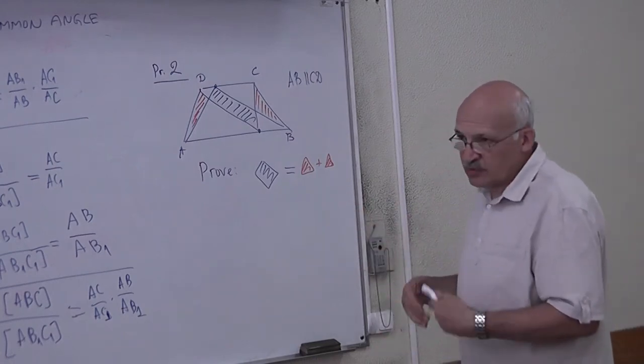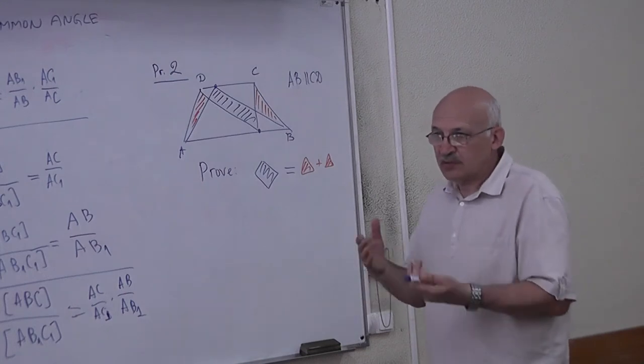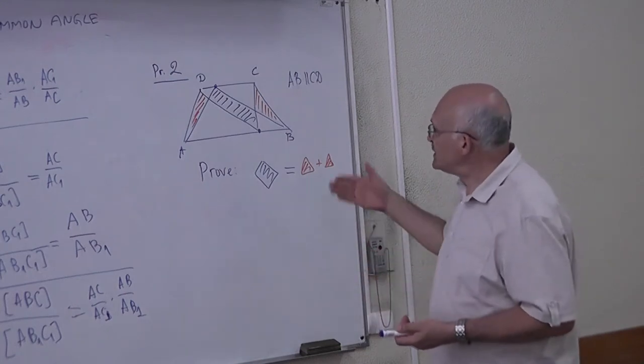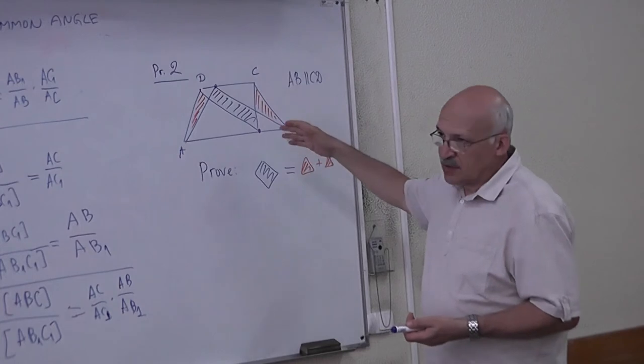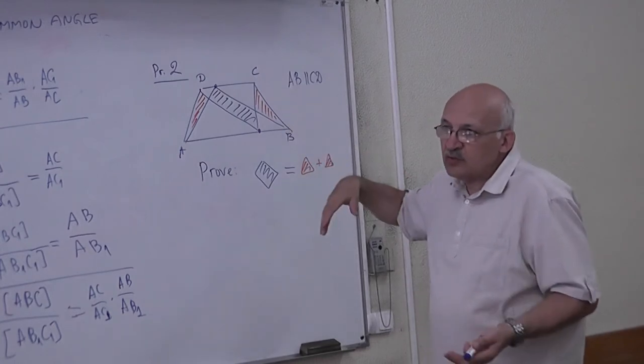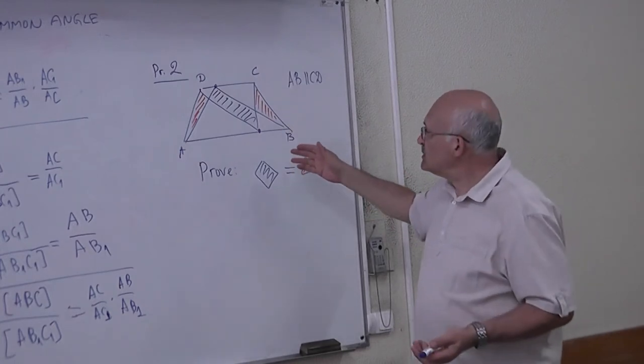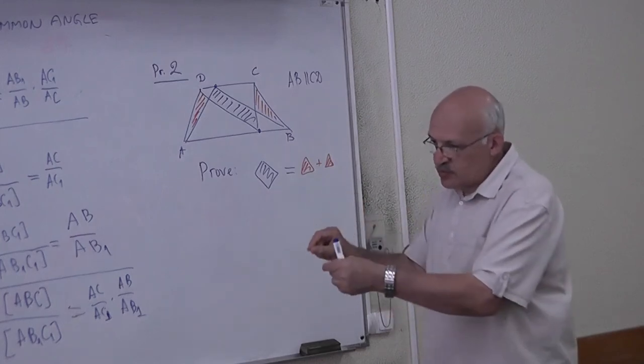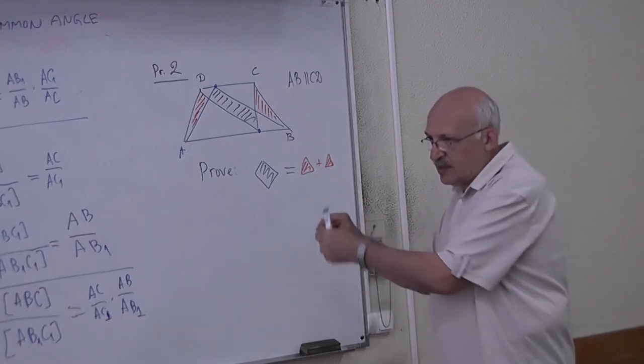Второй подход. Один подход – дополнение, а второй подход – разрезать. Разрезать кусочки, эти обе фигуры на кусочки, и потом сравнить. Эти два кусочка обе фигуры равны, эти два равны.